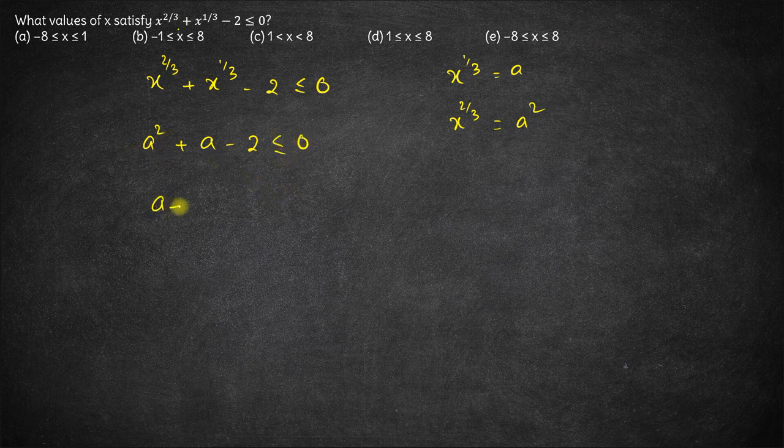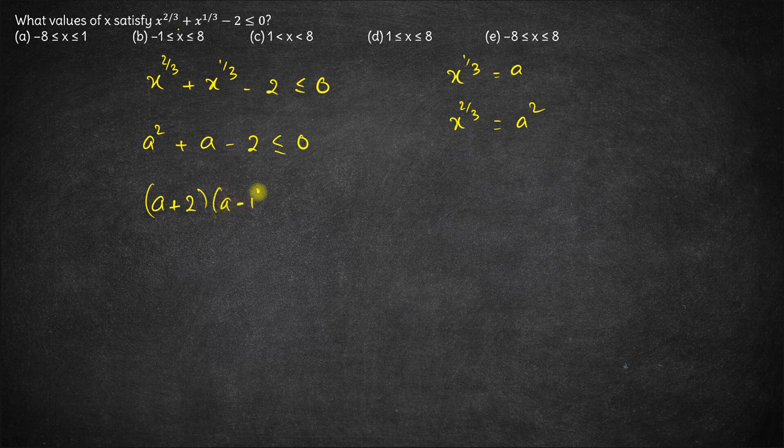Once you factorize, this comes out to be (a + 2)(a - 1) is less than or equal to 0.